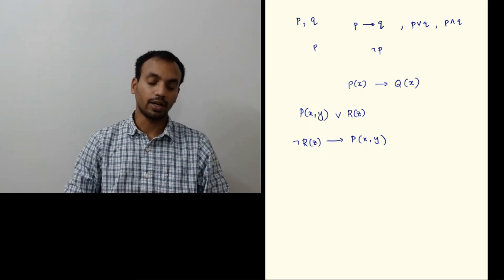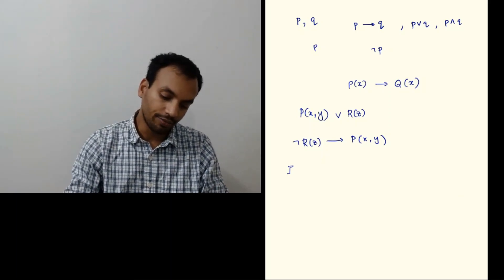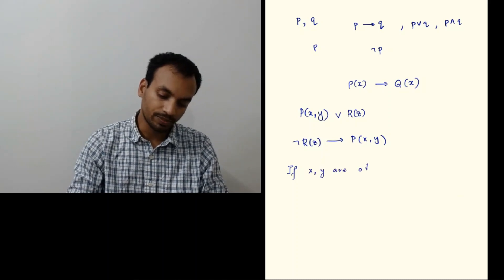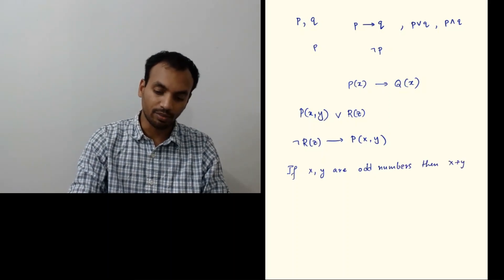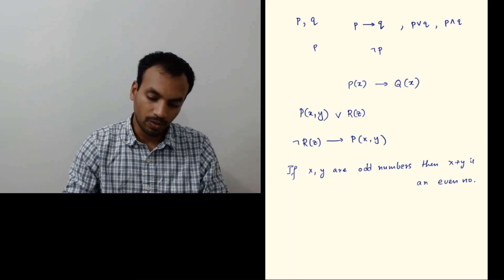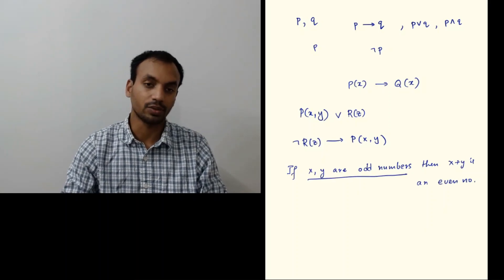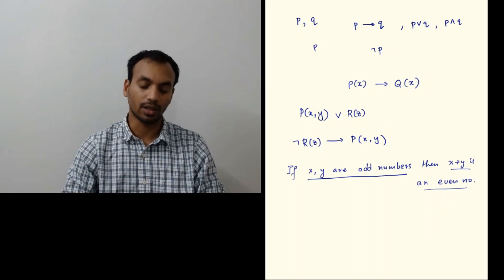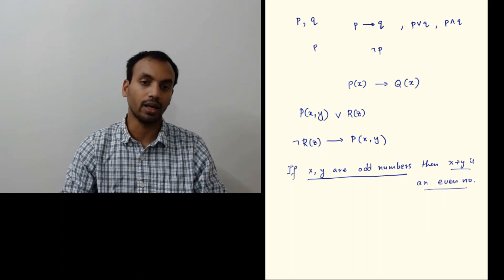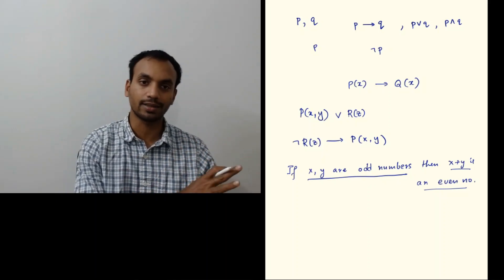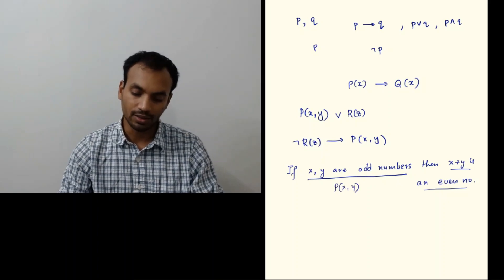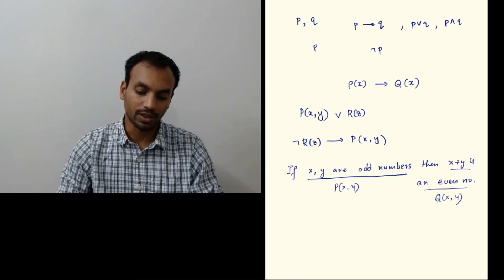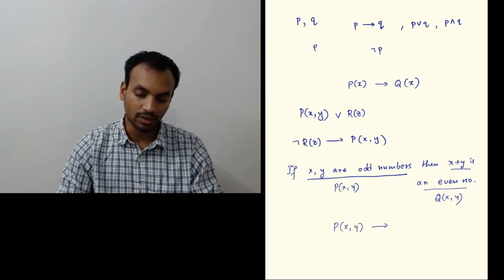Let's look at an example. Take the statement: if X and Y are odd numbers, then X plus Y is an even number. We have two predicates here: 'X and Y are odd numbers' (which can also be written as 'X is odd' and 'Y is odd') and 'X plus Y is an even number'. Let's call these P(X,Y) and Q(X,Y) respectively. So this statement says P(X,Y) implies Q(X,Y).